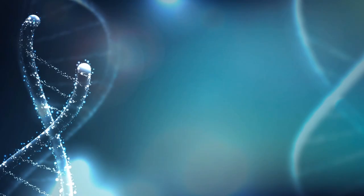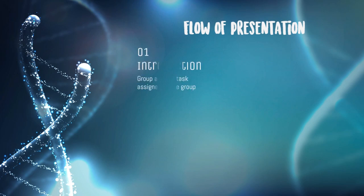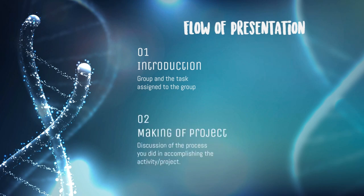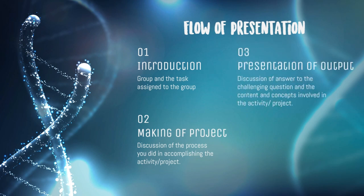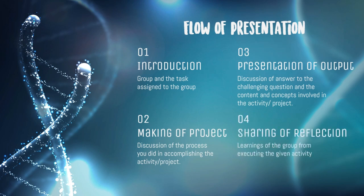This is the order of how we did the activity. We first have the introduction where tasks are assigned to different groups. For Team A, we've been given meiosis. Next is making the project where we discussed what and how to do things, and divided the tasks among ourselves to easily complete the activity. Next is the presentation of the output, and lastly, sharing of reflection which will take place at the end of our presentation.